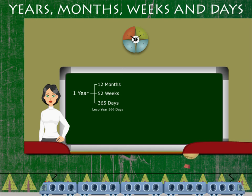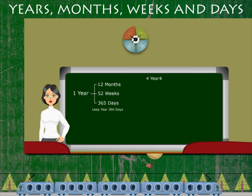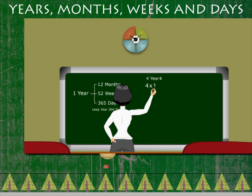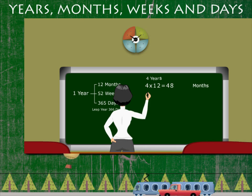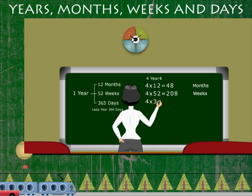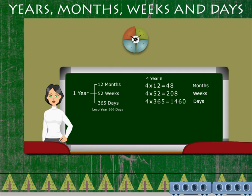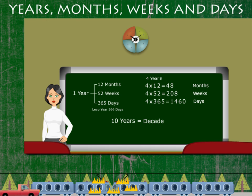The leap year comes after 48 months, or 208 weeks, or 1,460 days. A 10-year period is called a decade. Thank you, ma'am.